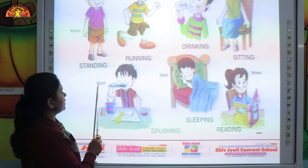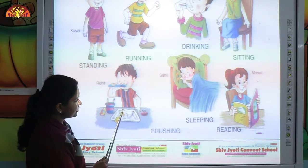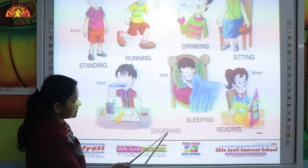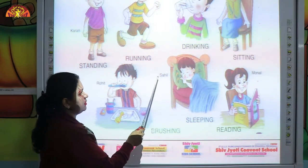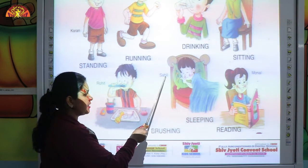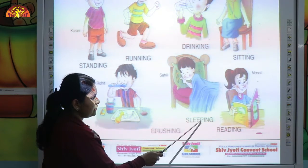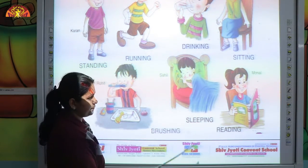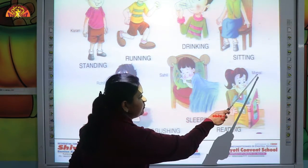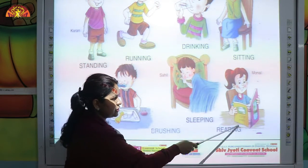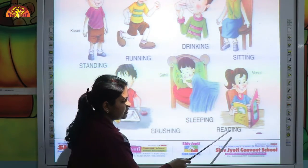This is Rohit. Rohit is brushing — B-R-U-S-H-I-N-G, brushing. This is Sahil. Sahil is sleeping — S-L-E-E-P-I-N-G, sleeping. This is Monal. Monal is reading — R-E-A-D-I-N-G, reading. She is reading a book.